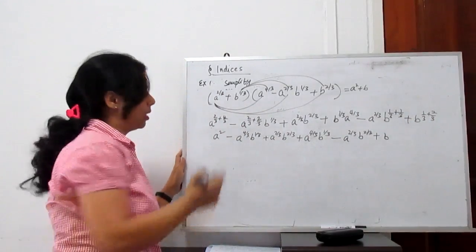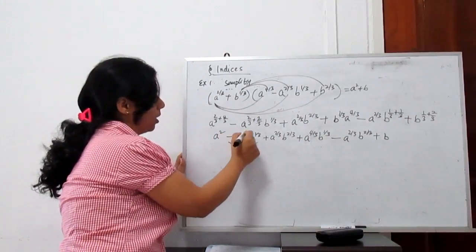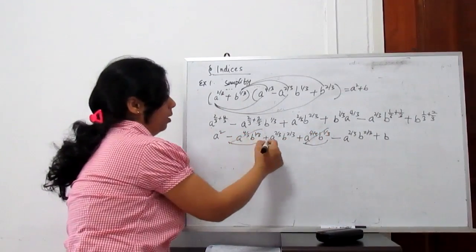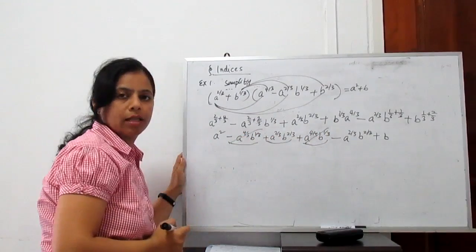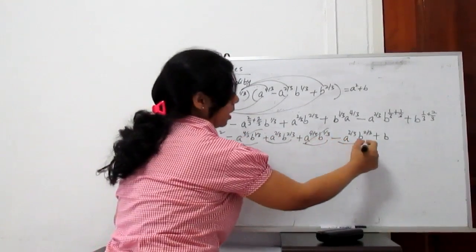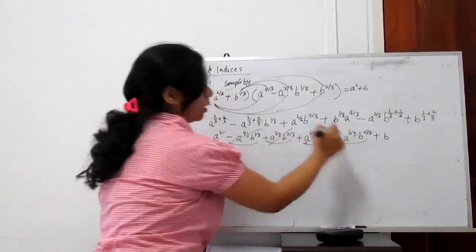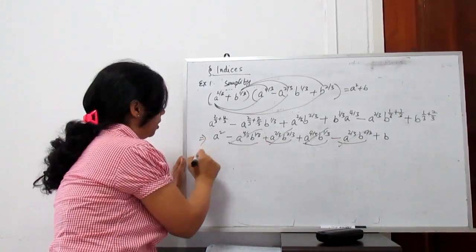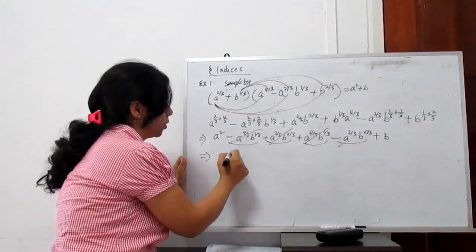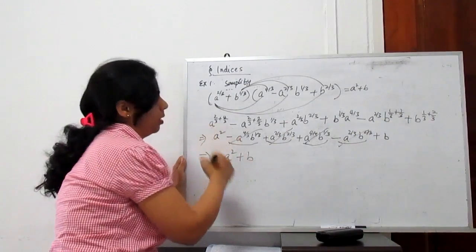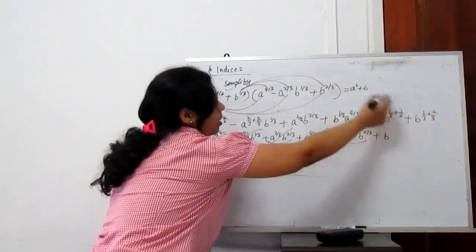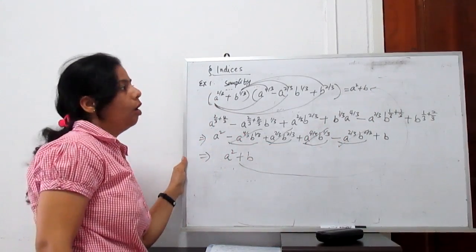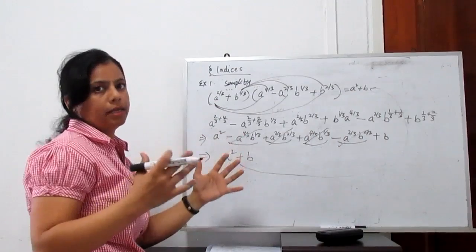Now let's see what cancels out. The negative A to the power 4 by 3 times B to the power 1 by 3 cancels with the positive one. The positive A to the power 2 by 3 times B to the power 2 by 3 cancels with the negative one. What is left is A squared plus B, which is what we required on the right hand side. That is the simplification of the given indices expression.